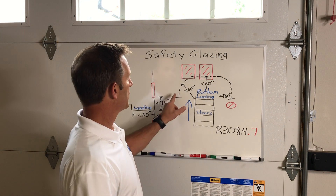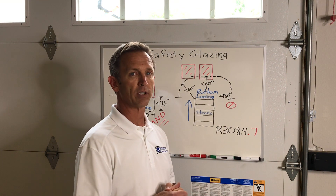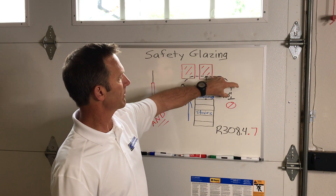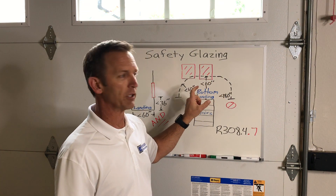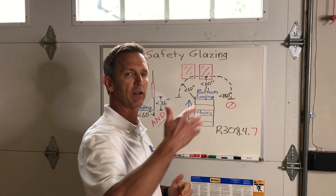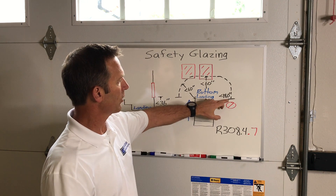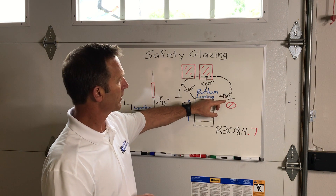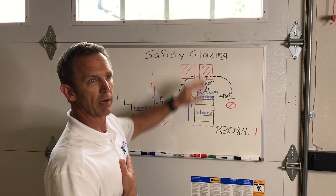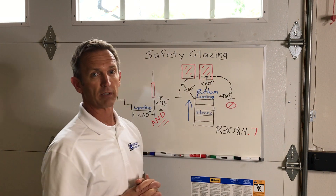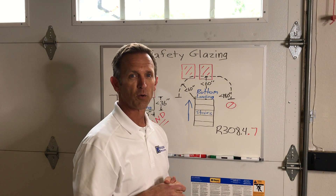There's an additional qualifier: the code references an arc of less than 180 degrees. Any glazing that falls within this arc — less than 60 inches horizontally and less than 36 inches vertically from the bottom tread nose — is deemed a hazardous location. The concern is someone coming down the stairs and falling into the glass. Anything greater than 180 degrees is not a concern for that direction of travel, which is why only the area within 180 degrees is addressed. Thanks for watching as we try to demystify the locations for safety glazing.